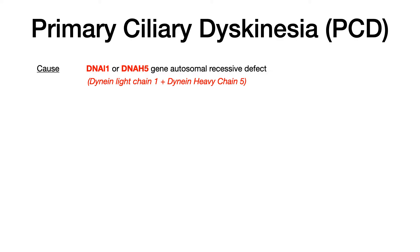Let's start with the genetic basis of Primary Ciliary Dyskinesia. The genetic defect occurs in the DNAI1 or DNAH5 gene, and these genes code for products known as Dynein light chain 1 and Dynein heavy chain 5.